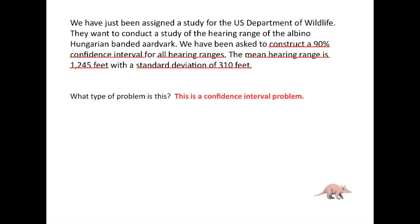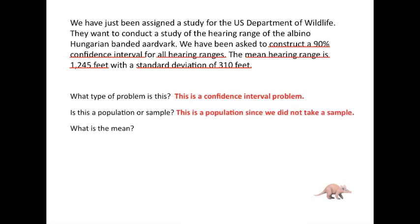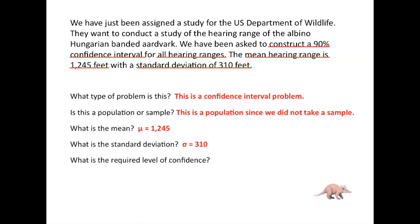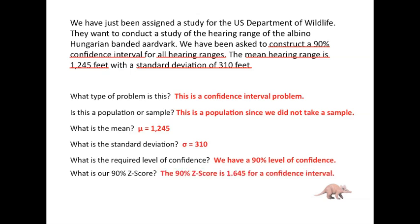What type of problem is this? This is a confidence interval problem. Is this a population or a sample? This is a population — we didn't take a sample. Mu is 1,245 feet, and sigma is 310 feet. The required level of confidence is 90%. And what is the 90% Z-score — what Z-score traps 90% of the data on either side of the mean? The Z-score we want on either side of the mean is 1.645 for a confidence interval.